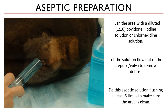For the aseptic preparation — because we want it to be as aseptic as possible to prevent any ascending infection to the urinary bladder — you have to flush the inside of the prepuce or vulva with a diluted betadine solution or a diluted chlorhexidine solution, as shown in this image. The solution washes the inside of the area and is then let to flow out to remove dirt and debris. Do this at least five times.